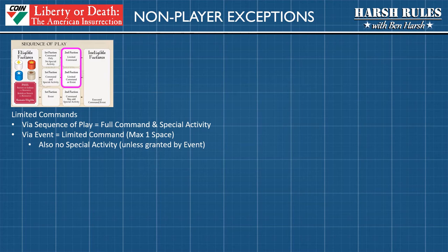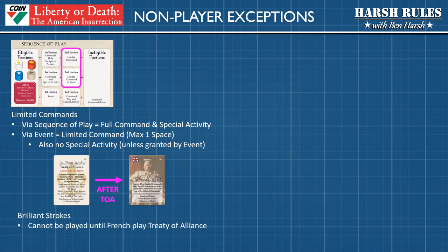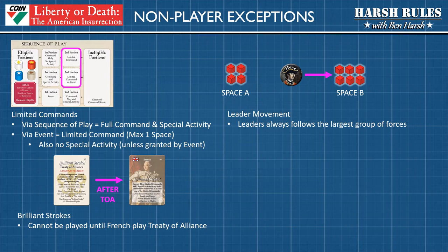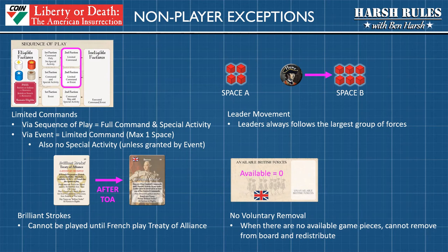The next exception concerns brilliant stroke cards: non-player factions will not execute brilliant stroke cards until after the French treaty of alliance has been played. If the non-player faction is the French, they will play their brilliant stroke immediately upon reaching the required active forces threshold. For leaders, non-player faction leaders will always follow the space with the largest group of that faction's forces present. Finally, the no voluntary removal rule means that once all available forces are on the game board, a non-player faction cannot remove pieces and redistribute them to different spaces like a live player in a traditional game.